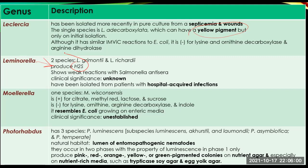Moellerella has only one species, M. wisconsensis, and it is positive for citrate, methyl red, lactose, and sucrose. In contrast, it is negative for lysine, ornithine, arginine decarboxylase, and indole. It is similar to E. coli growing on enteric media, and similar to Leminorella, Moellerella has an unknown clinical significance.